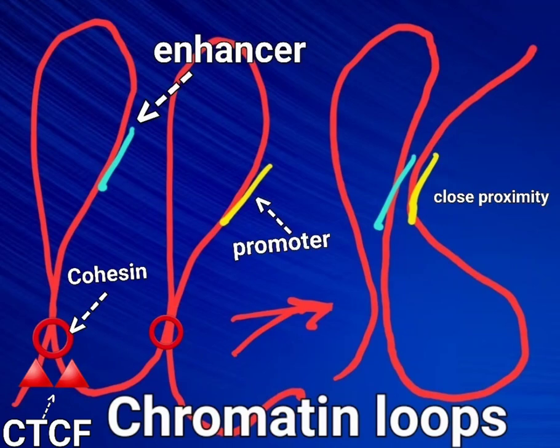Loop Extrusion Model: a simplified version of the cohesin-mediated loop extrusion model. The model suggests that progressive extrusion of chromatin by the cohesin complex (red ring) leads to formation of chromatin loops anchored by the structural protein CTCF (CCCTC binding factor), bound to convergent CTCF sites.